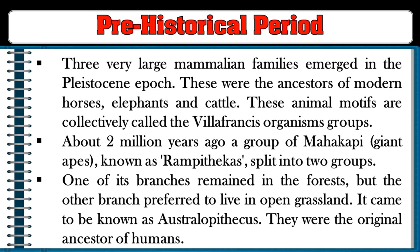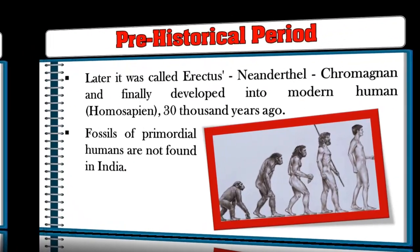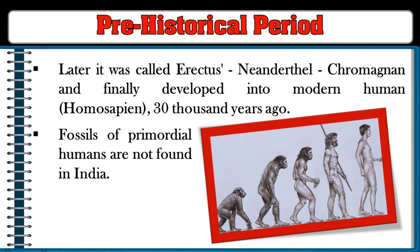About two million years ago, a group of giant apes known as Ramapithecus split into two groups. One branch remained in the forest, but the other preferred to live in open grassland and came to be known as Australopithecus — the original ancestors of humans. Later it evolved into Erectus, Neanderthal, Cro-Magnon, and finally developed into modern human Homo sapiens about 30,000 years ago.